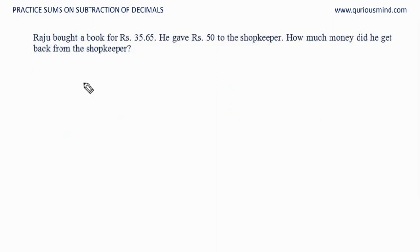Raju bought a book for Rs 35.65. He gave Rs 50 to the shopkeeper. How much money did he get back from the shopkeeper? He has given this much and the shopkeeper has to take 35.65 from that and return the remaining. So we have to subtract 35.65 from 50. The decimal point is always here when we have whole numbers. Let's align the point.